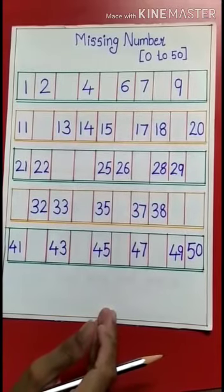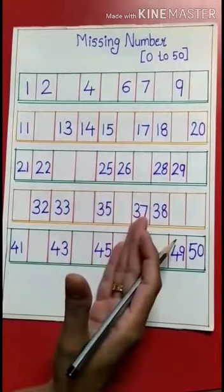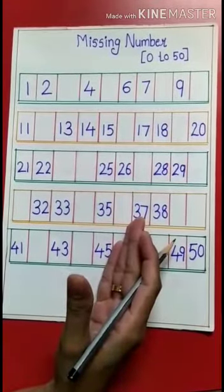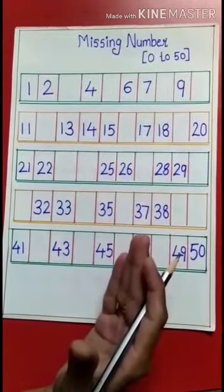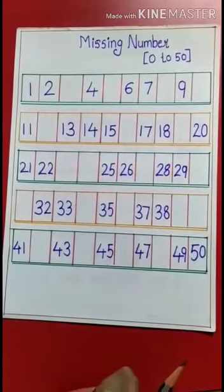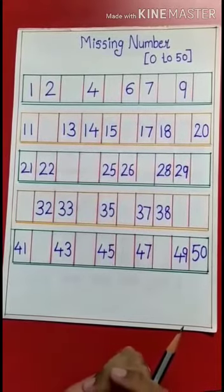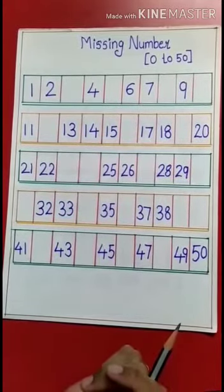So this is our math worksheet, and I have written the numbers in the boxes, but I have forgotten to fill some boxes. As you can see here, some boxes are blank. So will you please help me to fill these boxes?